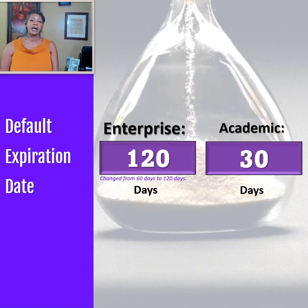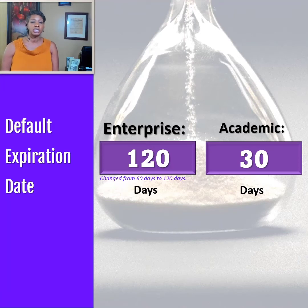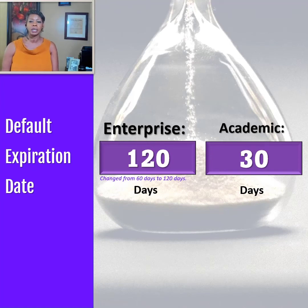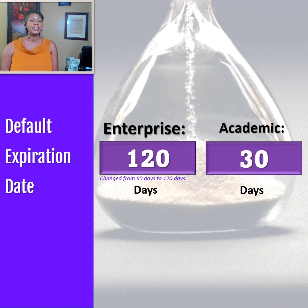Last month, Microsoft announced that the new default set expiration period is 120 days instead of 60 days, unless your organization system administrator changes the policy. Why did Microsoft make this change? Based on user feedback, Microsoft learned that only 1% of users do not review meeting recordings after 120 days, compared to 5% after 60 days. Apparently, they wanted to tighten up the percentage gap, so they changed the deletion period from 2 to 4 months.